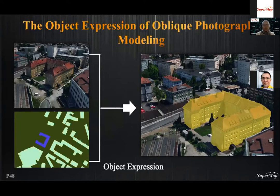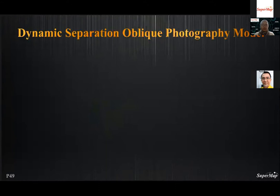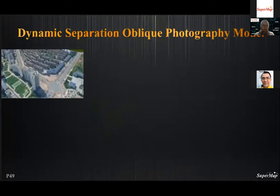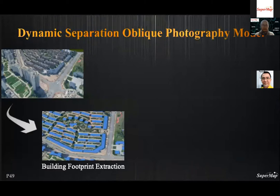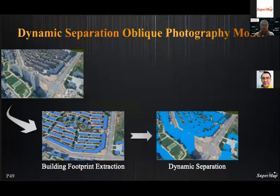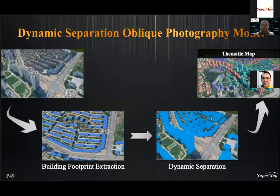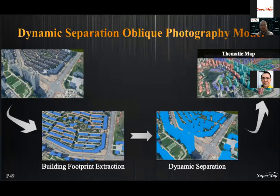In 2015, SuperMap supported OSGB data of oblique photography models and provided virtual dynamic monomer technology, achieving model monomer expression and further GIS applications including attribute query, SQL query, buffer query, thematic map expression, and flash/ground highlighting. It offers comprehensive support for oblique photography model data applications. SuperMap also provides a dynamic virtual construction circulation technology — using SuperMap AI technology and deep learning to extract the bottom polygon of each building, then selecting and highlighting each single building through thematic maps and buffer analysis. The full SuperMap GIS product series supports oblique photography model data across server, desktop, object, web, and mobile terminals.